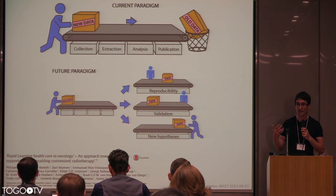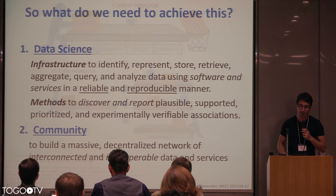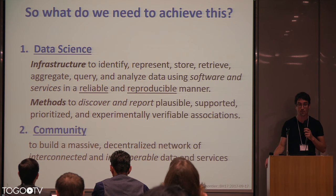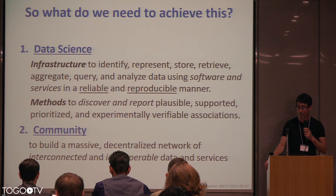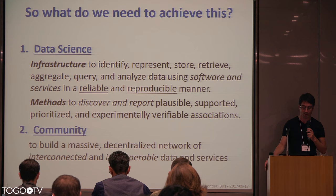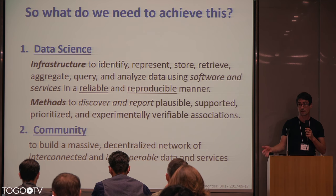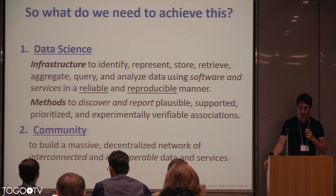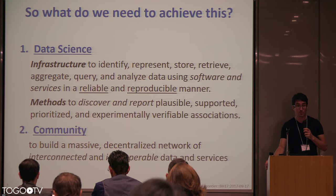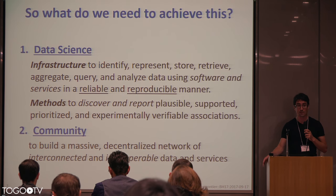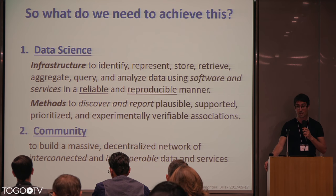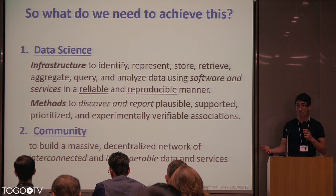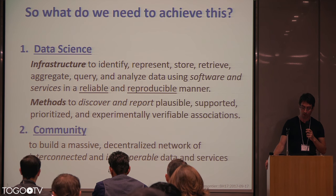The challenge: how do we move from publishing ideas with some data to really using data to generate all kinds of new activities? Part of the solution is twofold. One is to develop infrastructure — methods to identify, represent, store, retrieve, aggregate, query, and analyze data using software and services that are reliable and reproducible. We also need methods to report on what we already have and discover new, plausible, prioritized, and experimentally verifiable associations.